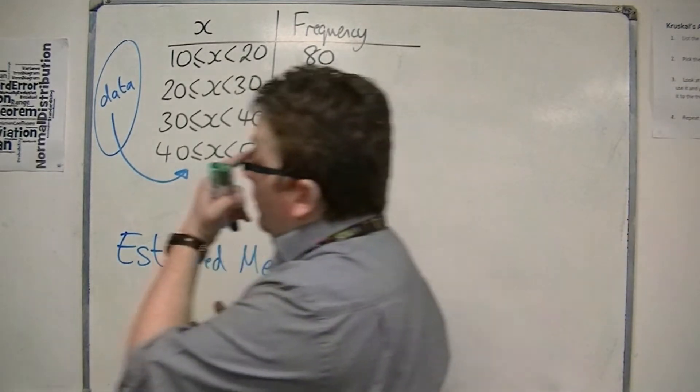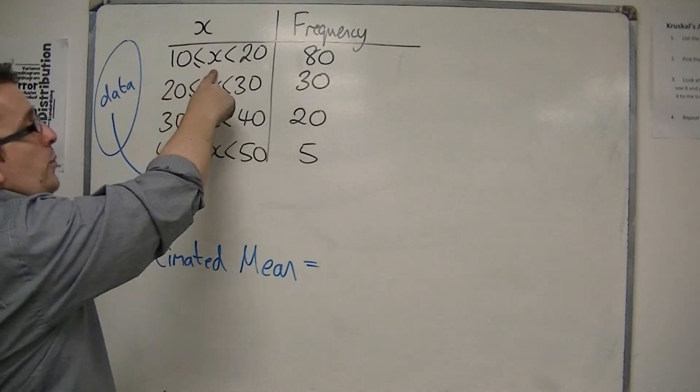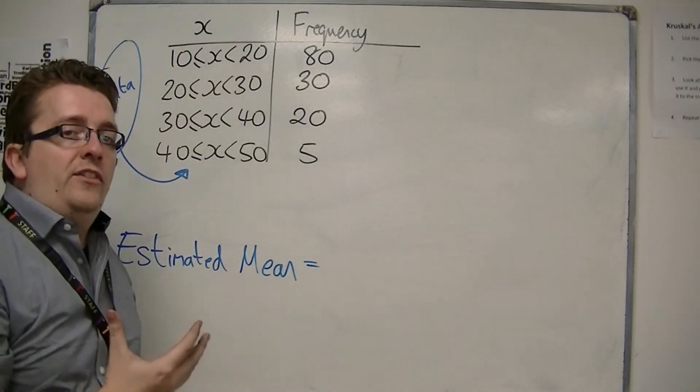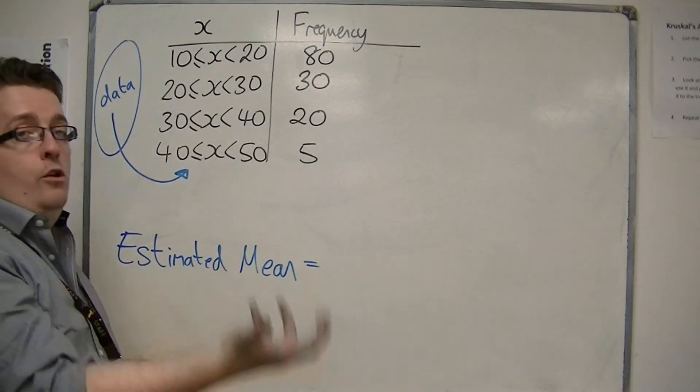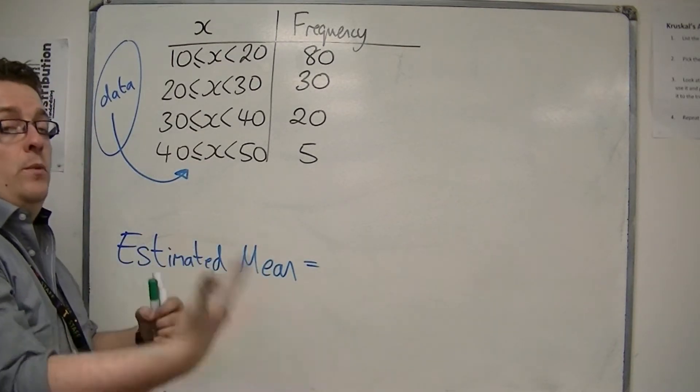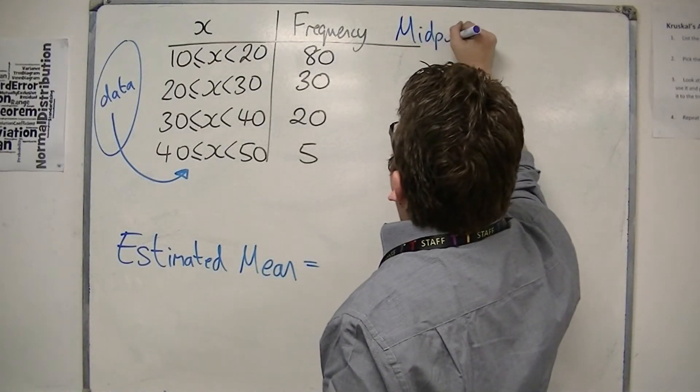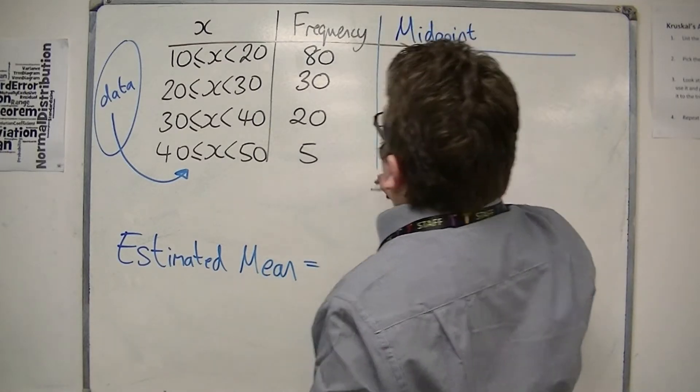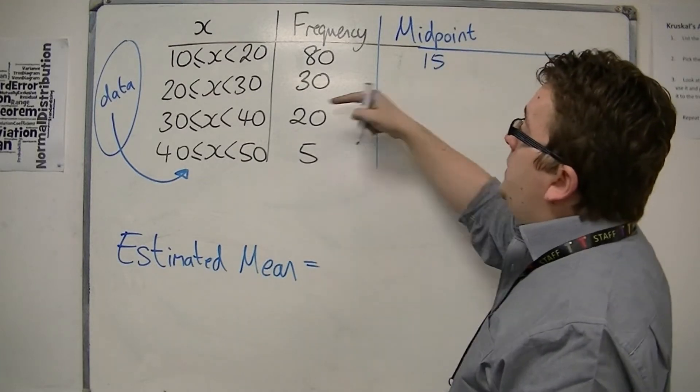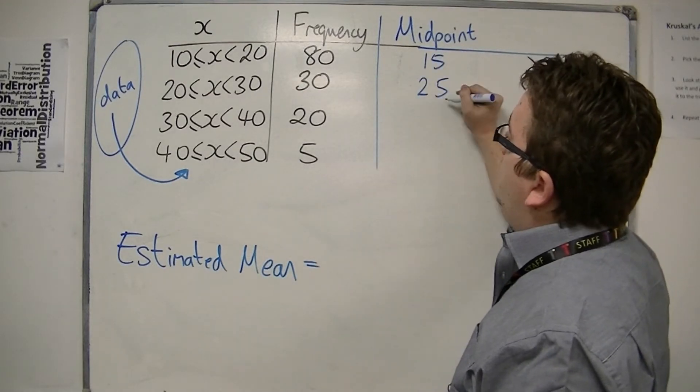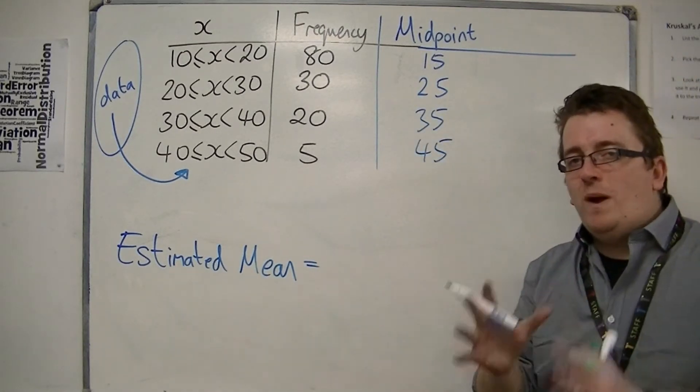It seems reasonable that if I take this to be 15, halfway between 10 and 20, there's likely have been some that were lower than 15 and some that were over 15, and hopefully they would cancel each other out. So I'm going to use the midpoint as an estimate. So I've got 10 to 20 is 15, 20 to 30 would be midway would be 25, then 35, and then 45. So these are my midway estimates.